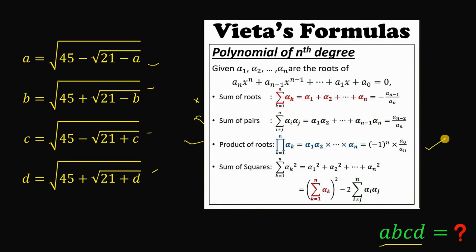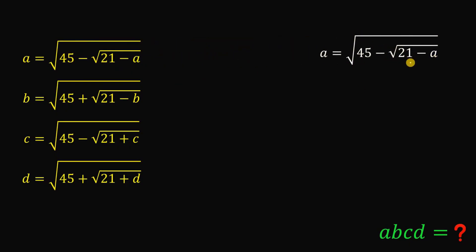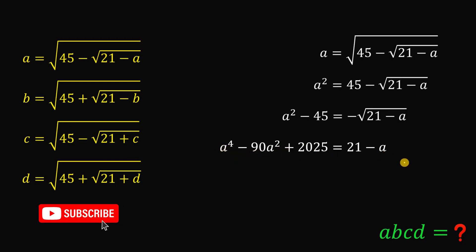If we get an equation that satisfies all four given equations, we just take the last term divided by the leading term to get the product of its roots. The first equation contains a: a equals the square root of 45 minus the square root of 21 minus a. We square both sides, giving a-squared equals 45 minus the square root of 21 minus a. Then subtract 45 from both sides and square again to eliminate the remaining square root, giving a to the fourth power minus 90a-squared plus 2025 equals 21 minus a.